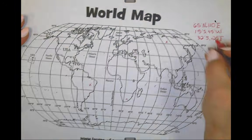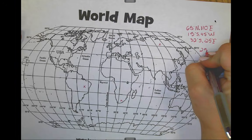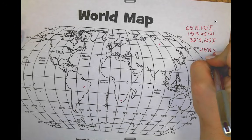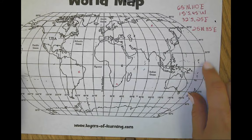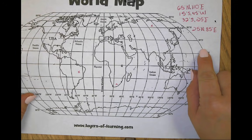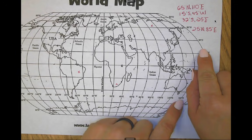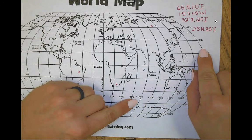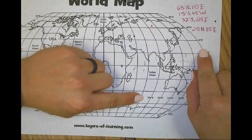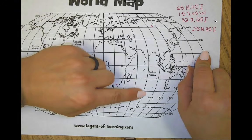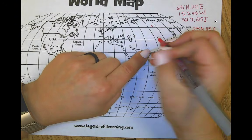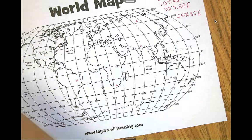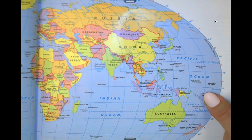Last one: 25 degrees north, 85 degrees east. Starting in the northern hemisphere going up — here's 20, so 25 is about right here. 85 degrees east — here's 80 and 100, so starting at 80 and going over to the side a little bit. I curve my finger up and come over to meet about here. Using the atlas again, I can see that I land in India.